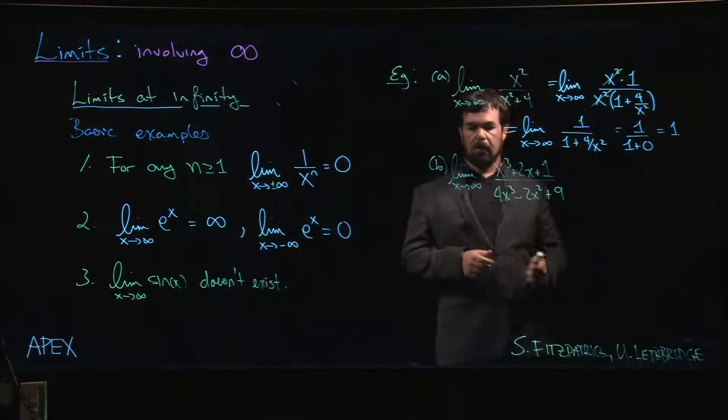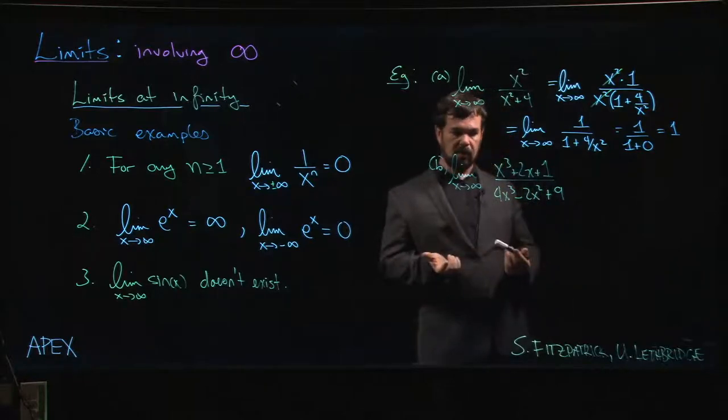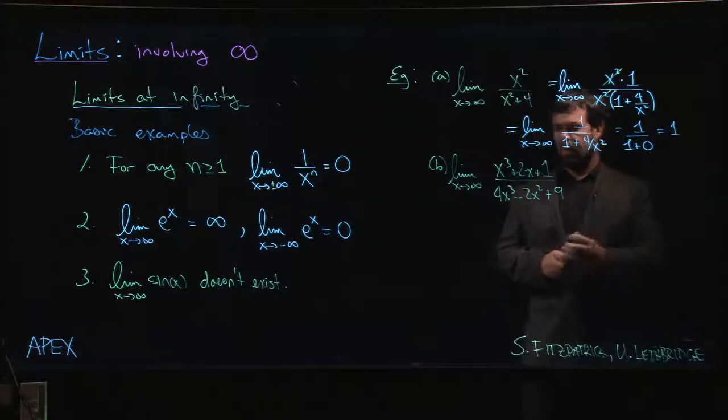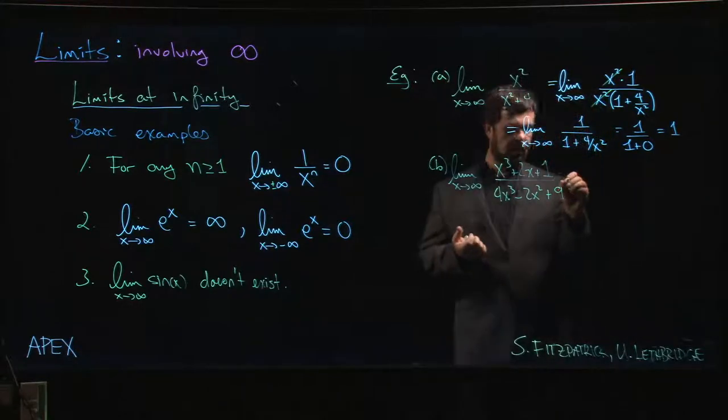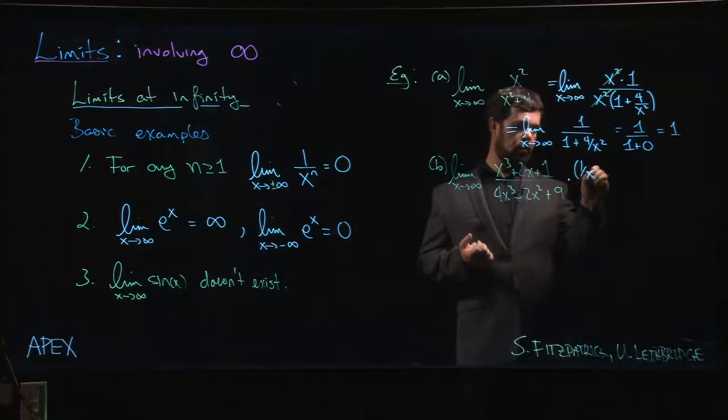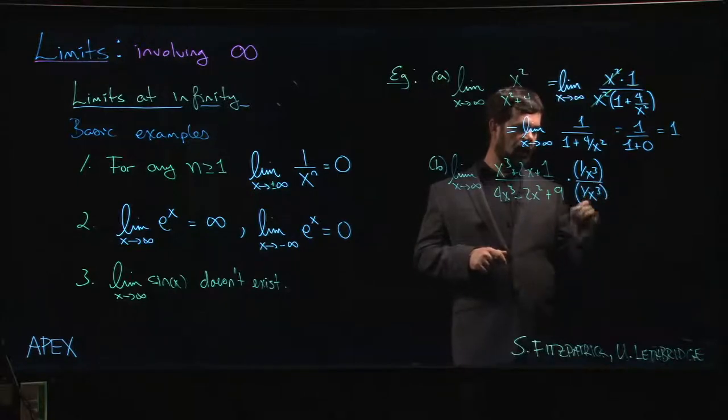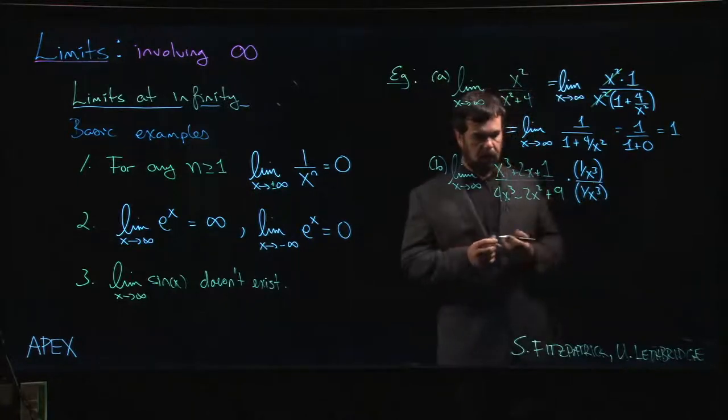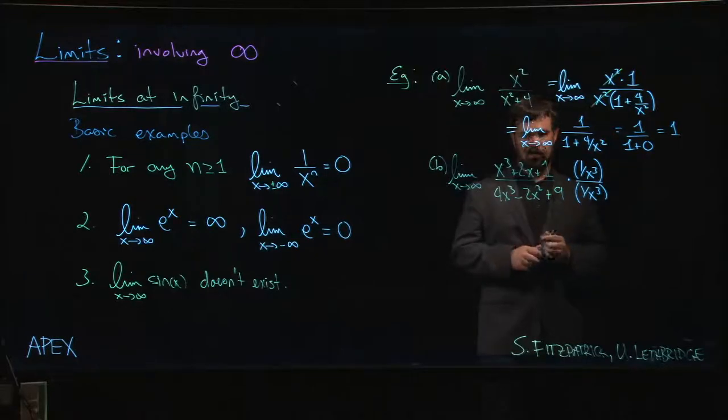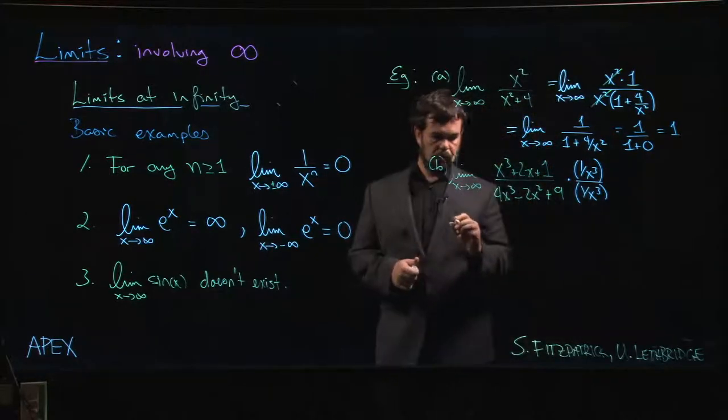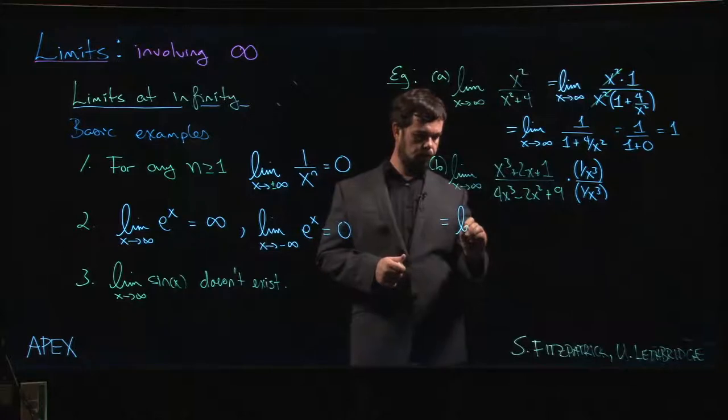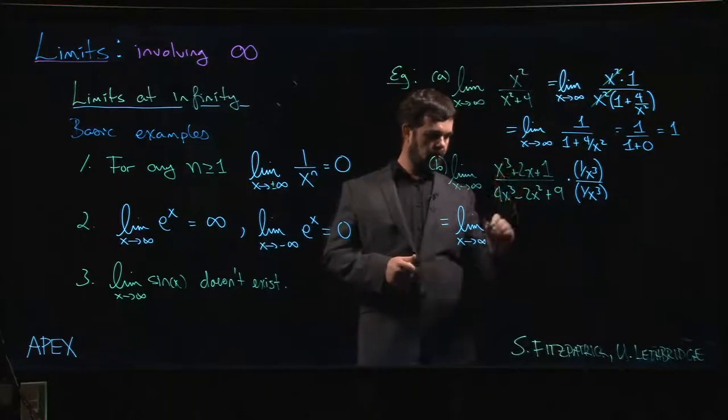Here's a more complicated looking example. In this case, maybe I proceed by kind of multiplying top and bottom. Again, the highest power of x that I see, in this case in both numerator and denominator, is x cubed. So we multiply by one over x cubed, and pushing that through we get one.